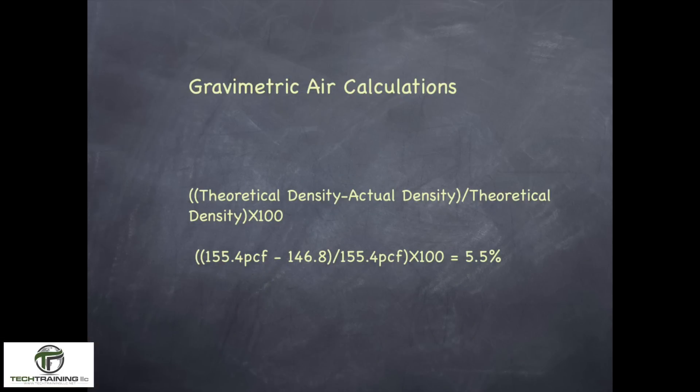And lastly, let's take a look at the gravimetric air calculations. The formula is: the theoretical density on an air-free basis minus the actual density, divided by the theoretical density on an air-free basis, times 100. Think of it as the heavier number minus the lighter number divided by the heavier number times 100. Here, 155.4 pounds per cubic foot is our theoretical density minus 146.8, which is our actual density, divided by 155.4, times 100, gives us an air-content gravimetric of 5.5%.